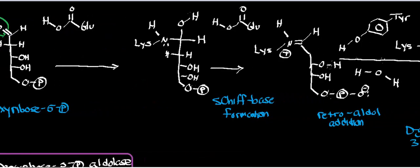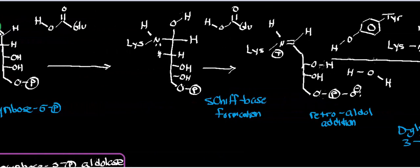Not only do we have this critical lysine in the active site, but we also have a glutamic acid in the active site — glutamate in the protonated state. The next step is Schiff base formation. The lysine lone pair kicks in and expels water — the hydroxide leaves, abstracting a proton from this glutamic acid and generating glutamate in the active site. In the process, we generate a protonated Schiff base.